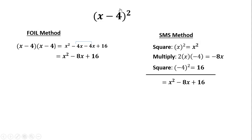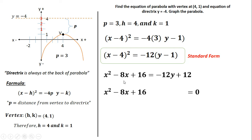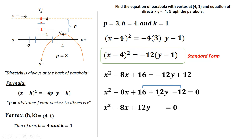On the right side, apply the distributive property: −12 times y = −12y, and −12 times −1 = positive 12. Then equate the whole equation to 0 by transposing all right-side terms to the left: −12y becomes +12y, and +12 becomes −12. Combining like terms: +16 − 12 = +4. The general form is x² − 8x + 12y + 4 = 0.